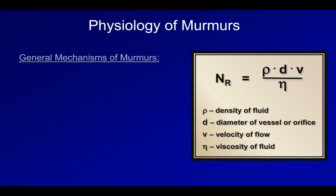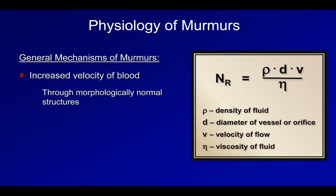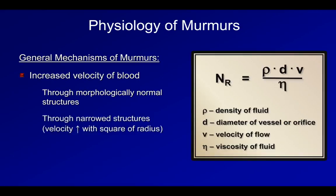Thus, turbulent flow is most likely when either there is an increased velocity of blood through morphologically normal structures, as seen during hyperdynamic states, or as a consequence of the blood velocity being increased by compression through a narrowed structure. Alternatively, decreased blood viscosity can also result in a murmur.